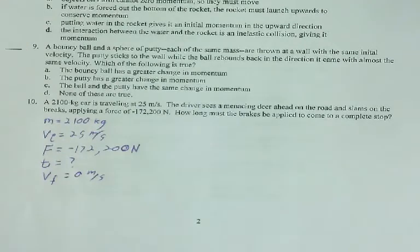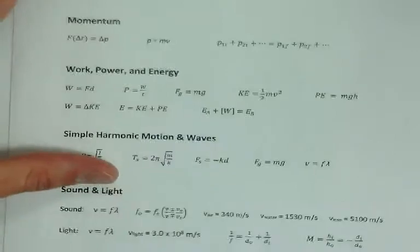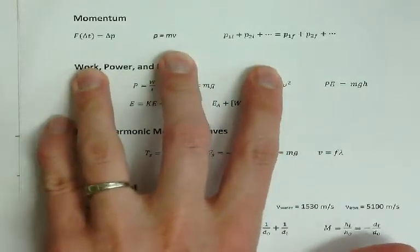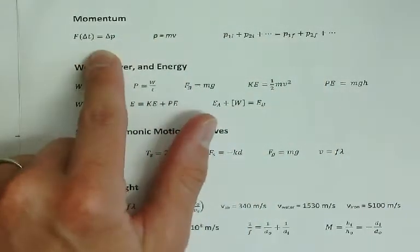Okay, so it's worth looking at our equations again to figure out what equation we need to use here. This is a momentum problem. This is the momentum unit. So, we need a momentum equation. We got three momentum equations that we talked about: conservation momentum, the definition momentum, and then impulse momentum.